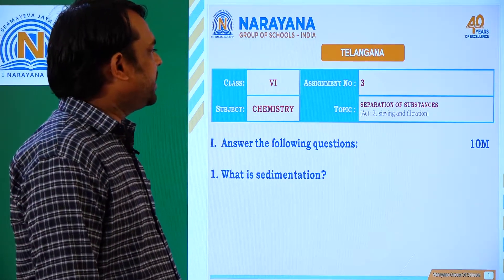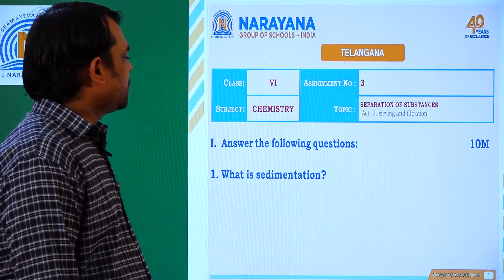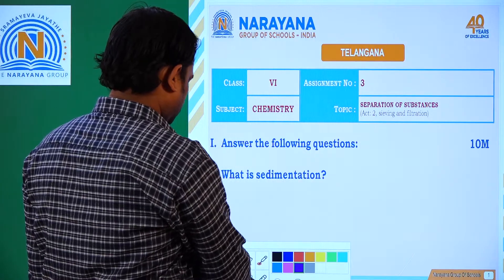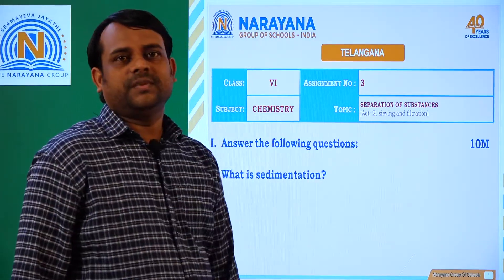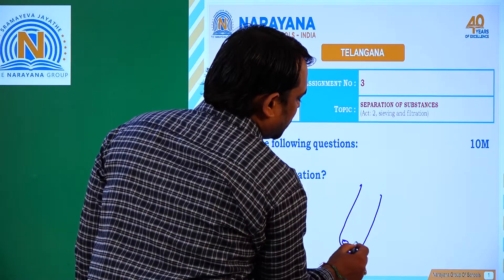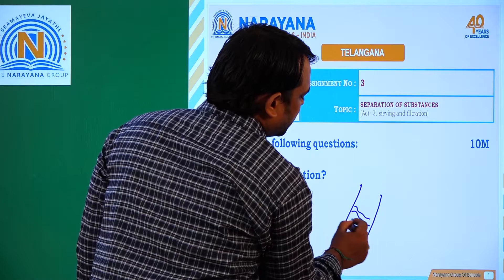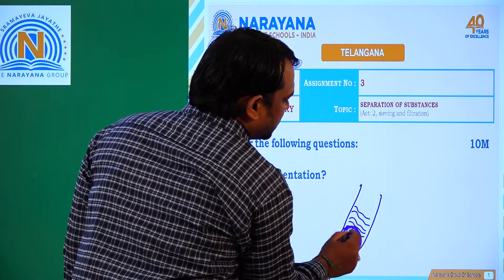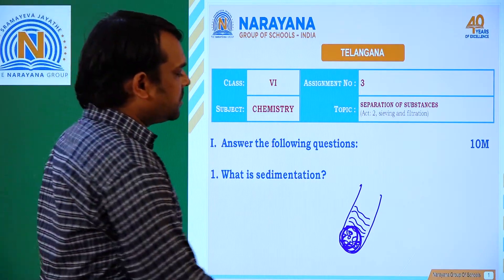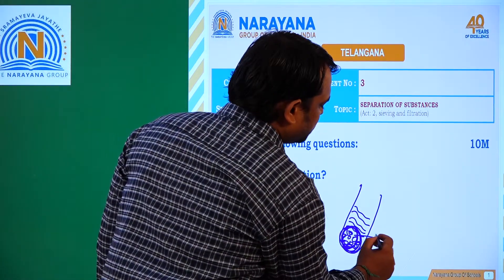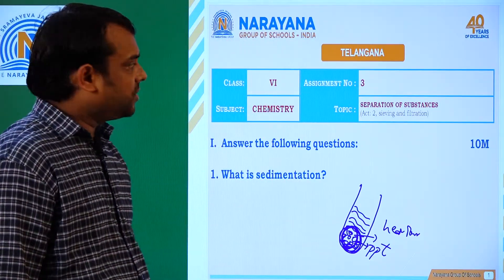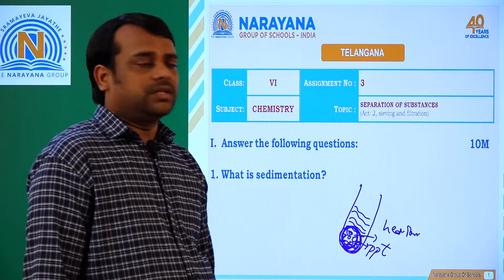So here, up to activity two — sieving and filtration. The first question is: what is sedimentation? Sedimentation is a process of separation of heavier particles which are settled down in a liquid. That means the process of separation of a precipitate from a liquid is nothing but sedimentation.